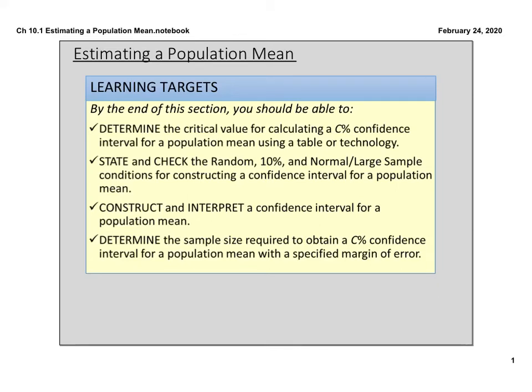Hey guys, it's Ms. Johnson and I'm here to bring you our first notes for chapter 10. This is the first half of section 10.1. We are flipping back to confidence intervals in this chapter, and this time we are doing confidence intervals of means. Back in chapter 8 we did confidence intervals for proportions. Now we're going to do confidence intervals for means.